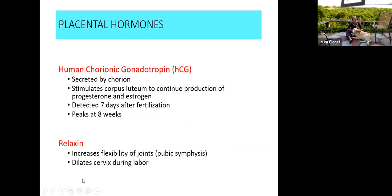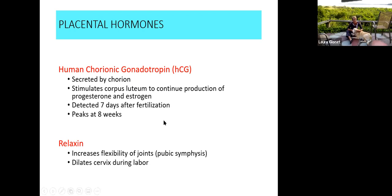Placental hormones: human chorionic gonadotropin is secreted by the chorion and stimulates the corpus luteum. This is the chemical signal telling mom's ovaries to keep secreting estrogen and progesterone so she doesn't enter the menstrual phase. This is how the fetus communicates to mom's body — essentially saying all systems are go, just keep secreting that estrogen and progesterone.